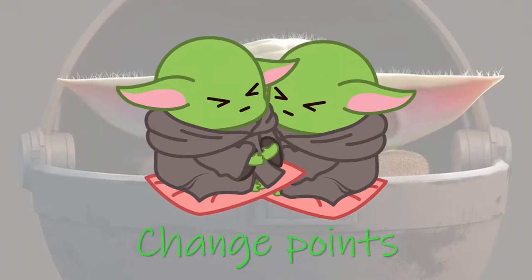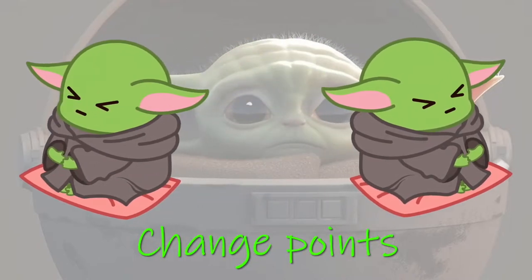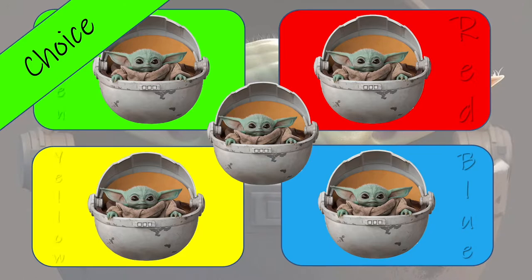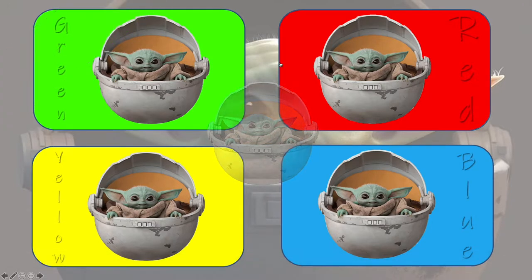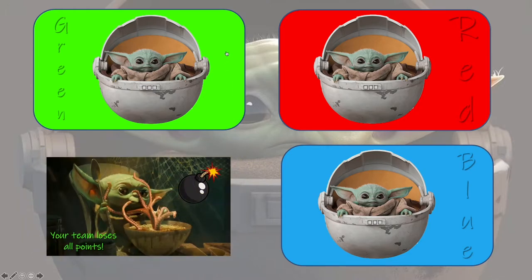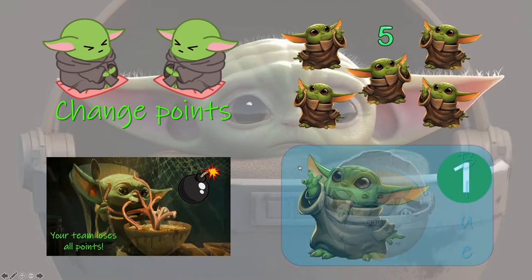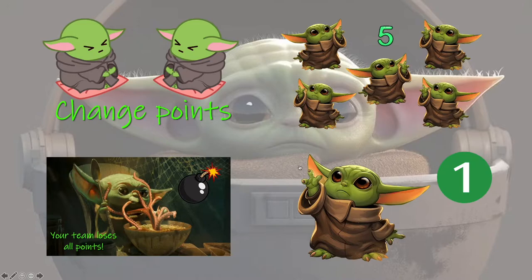There's also a change points slide, if you get that slide. And there's a choice slide — there are actually four different choice slides in the game. For the yellow and the green, click on the right-hand side and it will reveal what points the students will get. For the red and the blue, click on the left-hand side corners, and that will reveal the different points.